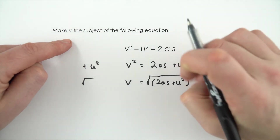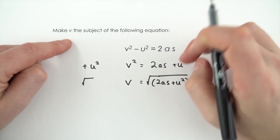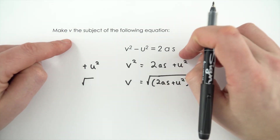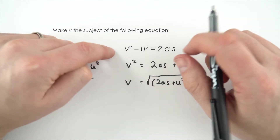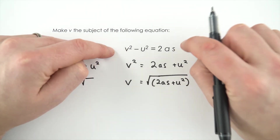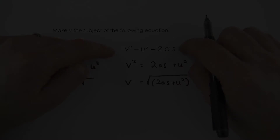So that's probably one of the more tricky examples that you might get in GCSE physics. And all we do is the same to the left side as we do to the right side, both times.